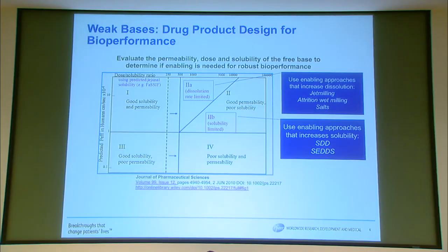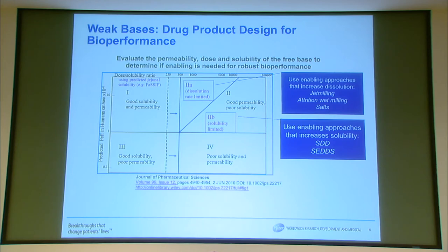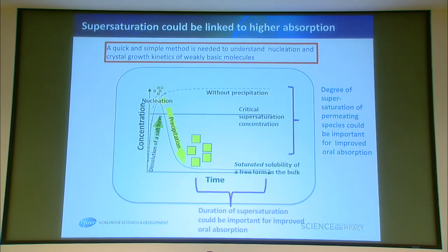Going back to BCS classification and developability PSC classification, we have four classes of compounds. Class 2 is poor solubility, high permeability, subdivided into dissolution-rate-limited and solubility-rate-limited absorption, each with different formulation fixes. For dissolution-rate-limited, you can reduce particle size by jet milling or attrition milling, or form salts for higher dissolution. For solubility-rate-limited absorption, you can use amorphous form instead of crystalline form, or lipid-based formulations to enhance absorption.